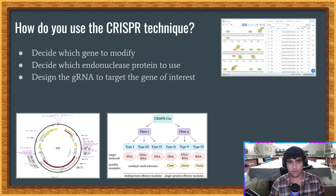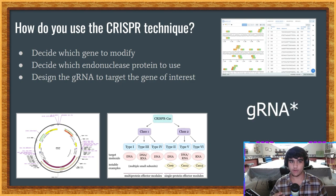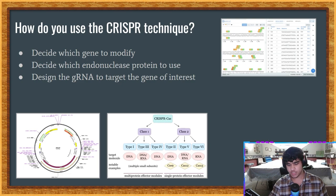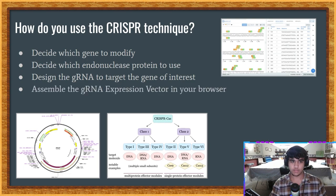Thirdly, they would design the gRNA to target the gene of interest. They would use sites like Benchling, which is one of the many useful sites that offer a free built-in gRNA design tool for this. Fourthly, they'd assemble a gRNA expression vector in their browser.